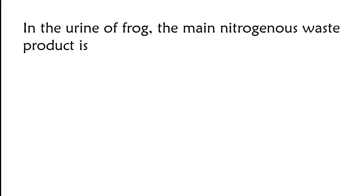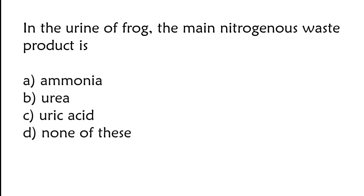In the urine of frog, the main nitrogenous waste product is: ammonia, urea, uric acid, or none of these. The correct answer is option B. In the urine of frog, the main nitrogenous waste product is urea.